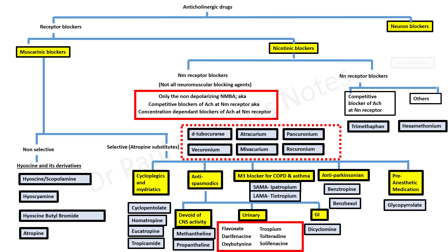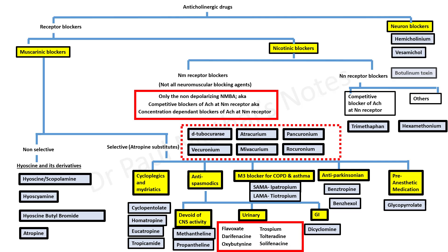Neuron blockers include drugs such as hemicholinium, vesamicol, and botulinum toxin.